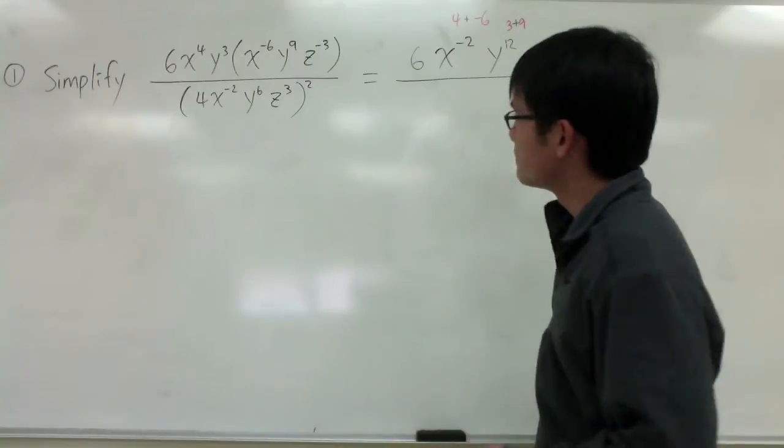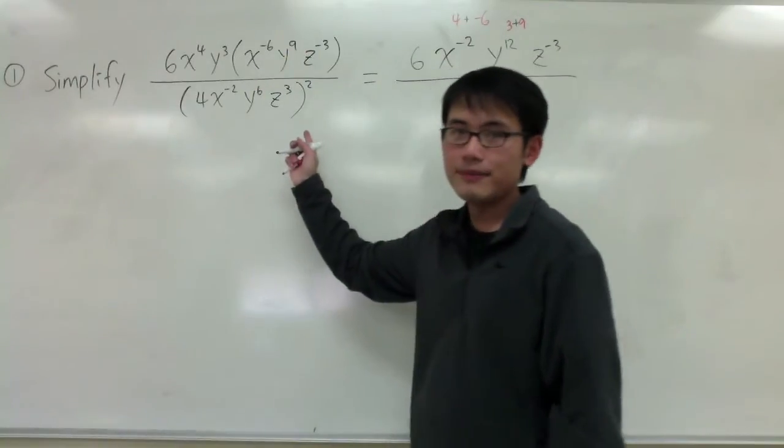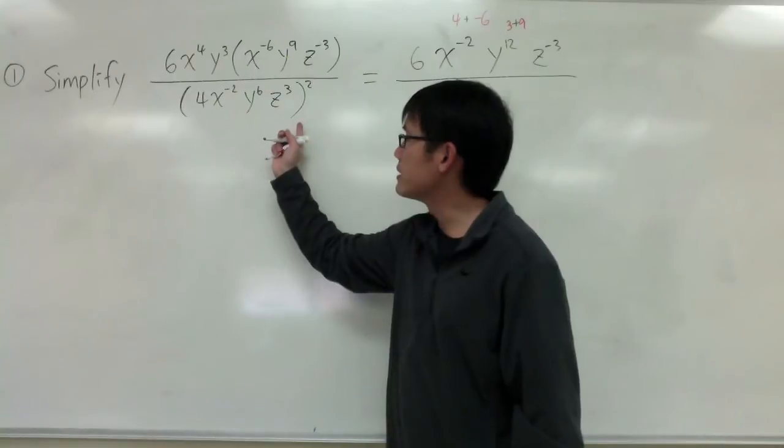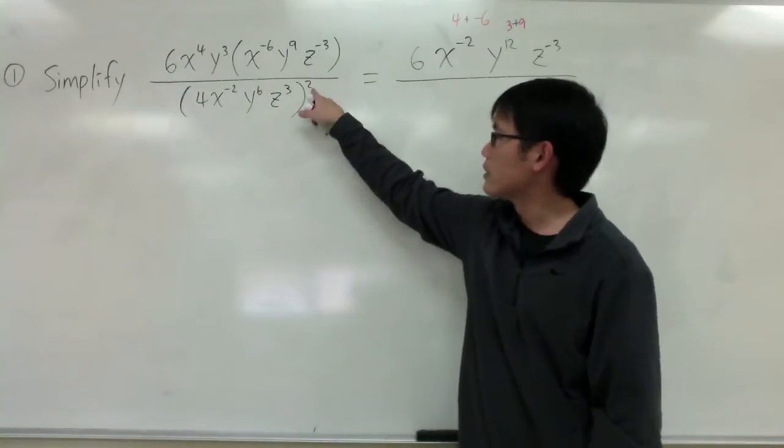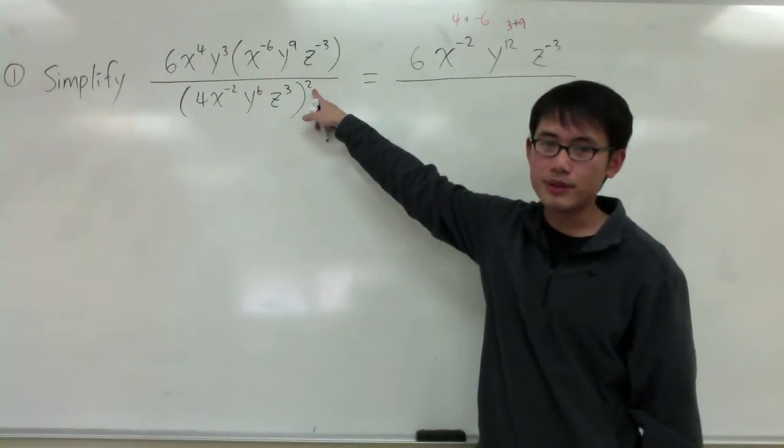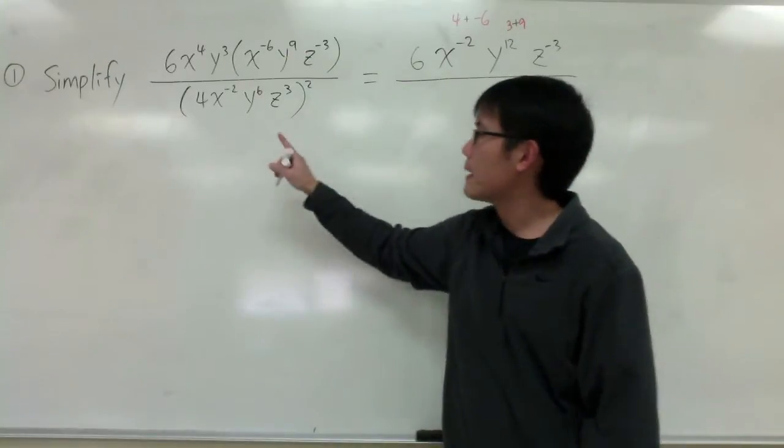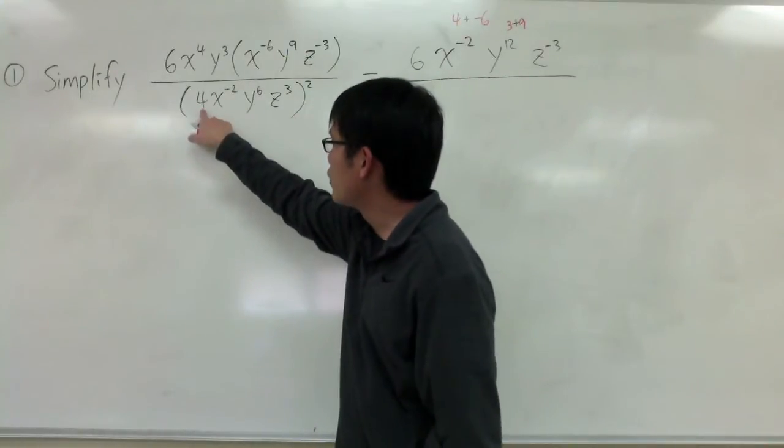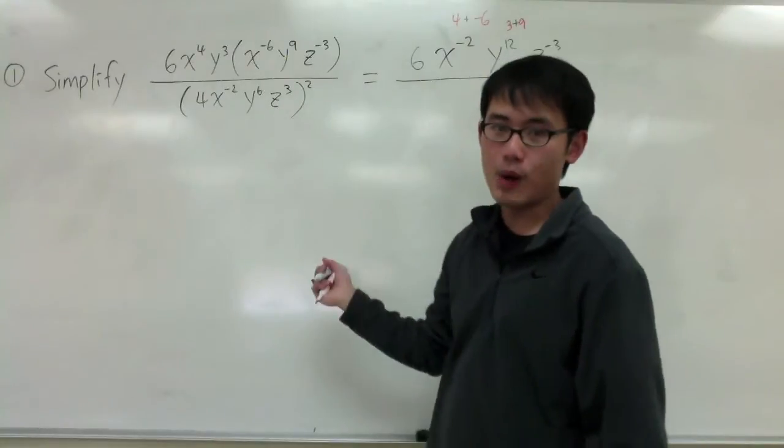In the denominator, we have a parenthesis, and there's an exponent, the square right here, the exponent 2 right here. So, to take off this, I'll have to raise each and every term inside to the second power.